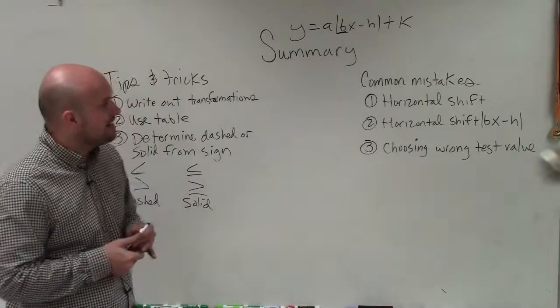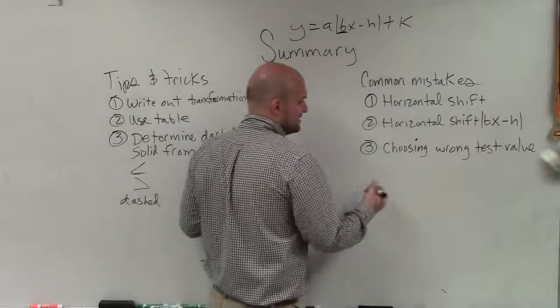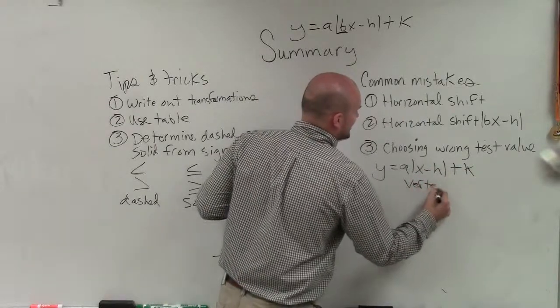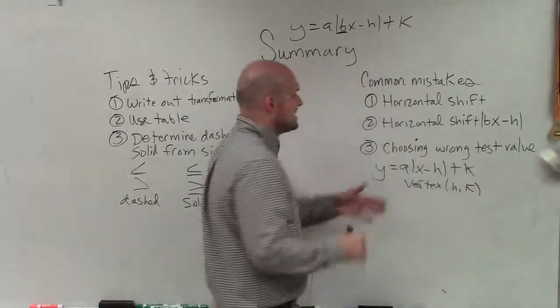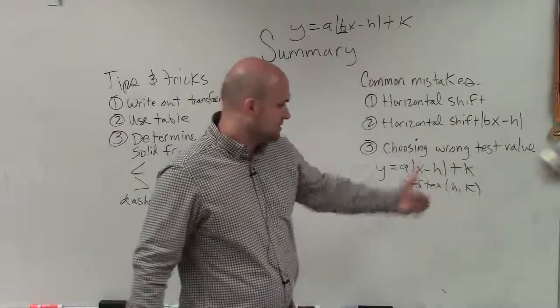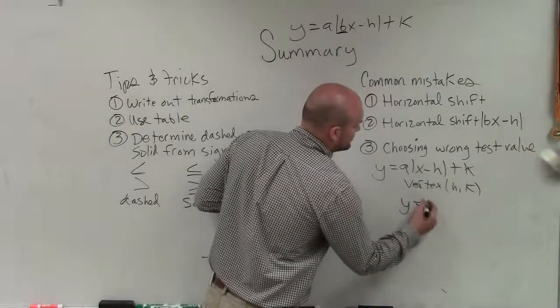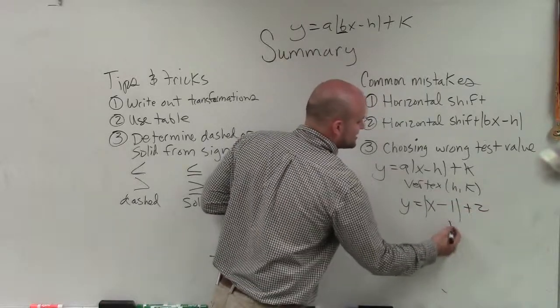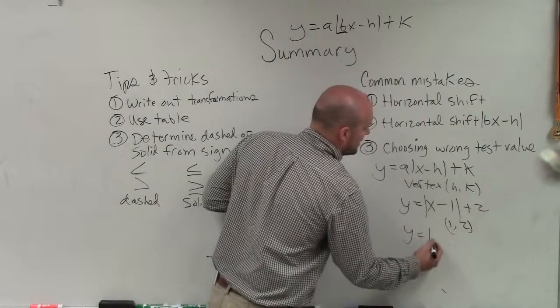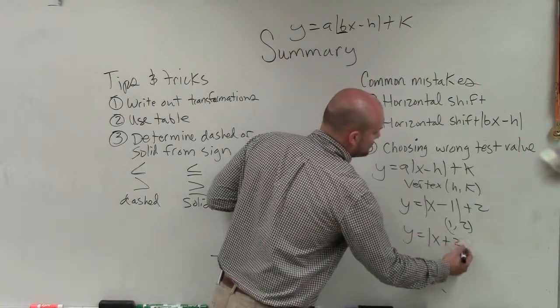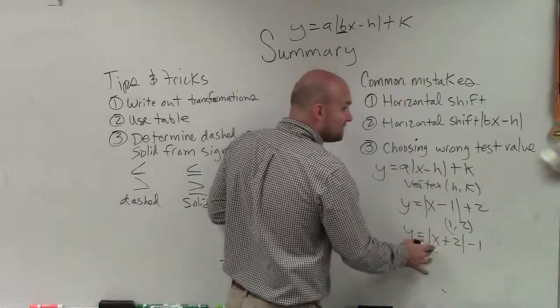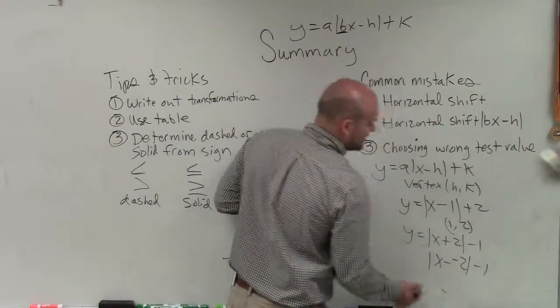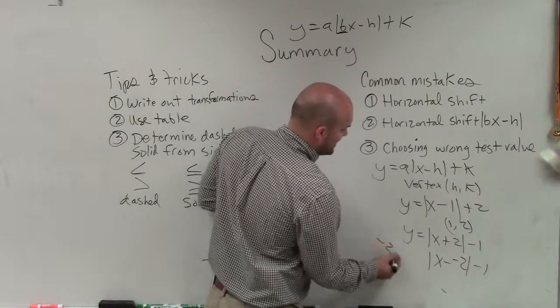Some common mistakes. The main important common mistake that I see is students shifting incorrectly. If I have y equals a times x minus h plus k, my vertex is h comma k. So just notice that this graph is x opposite of h plus k. So if I have y equals x opposite of 1, then it's x opposite of 1 plus 2. So therefore, my vertex is 1 comma 2. If I have y equals x plus 2 minus 1, then it's x opposite of positive 2. So x opposite of negative 2 minus 1. So it's x opposite of 2. That means my vertex is now at negative 2 comma negative 1.